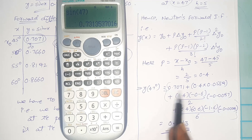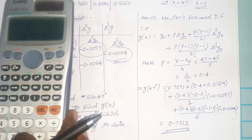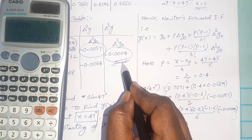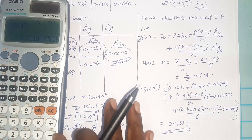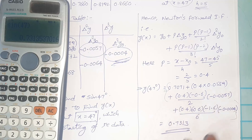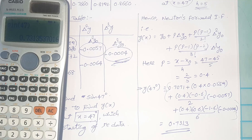To save time in examinations, you can copy the final answer from the scientific calculator. It is not necessary to calculate the entire expression manually — just be careful about the last value in the difference table. Substitute all values in Newton's forward formula and copy the final answer from the calculator. Thank you very much. See you in the next video where I will give more examples.